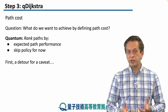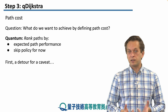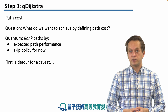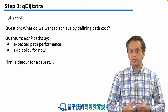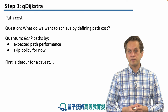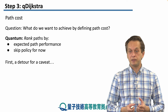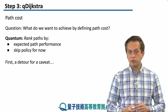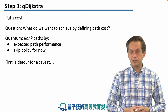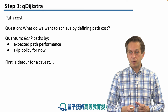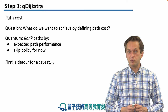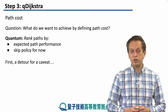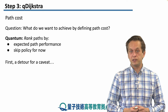Quantumly, we can start by thinking about the same things — ranking paths by expected path performance. We're not going to talk about policy yet, but before we move on, we need to do a little detour.